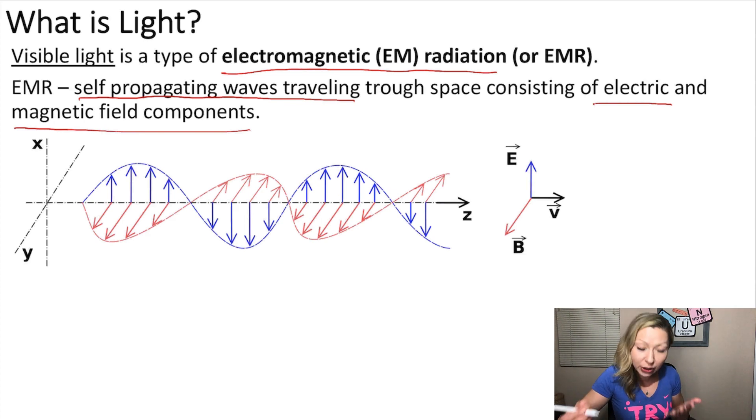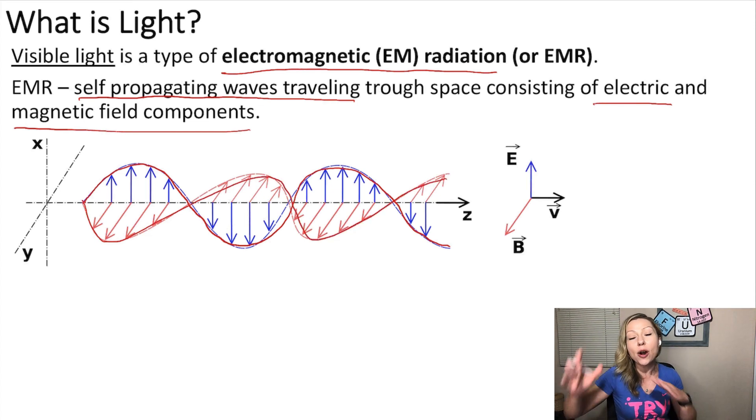So, if we look at this figure, the blue waves show us the electric component and the red waves show us the magnetic component and they are perpendicular on each other.